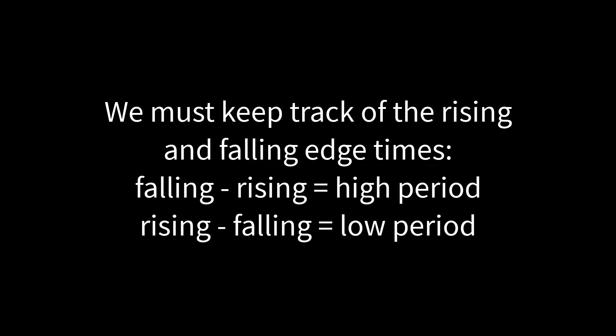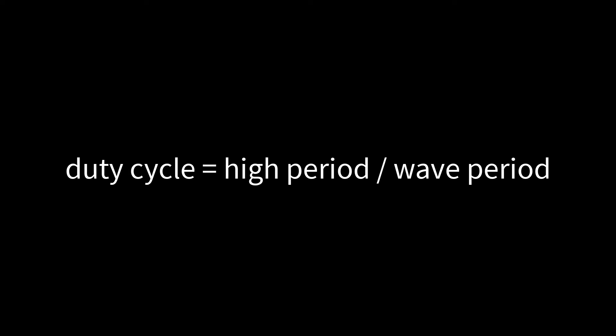We also need to remember to subtract rising edge from falling edge. If we do the opposite calculation, we will be calculating the low period, not the high period. If we know the total wave period and the high period, then we can subtract to calculate the low period. The low period is equal to the total wave period minus the high period. We can divide to determine the duty cycle of the square wave. The duty cycle is equal to the high period divided by the total wave period.